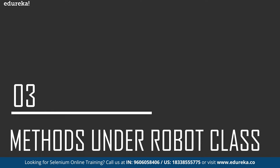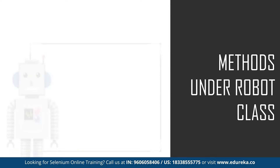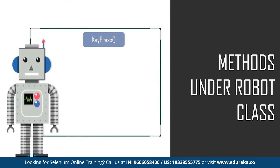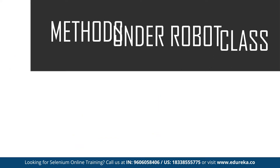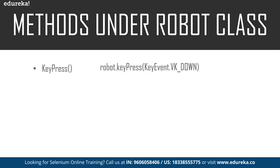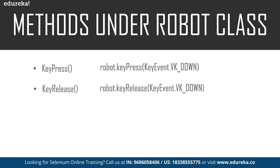Now let's move on to the different methods used while working with the robot class. There are basically five different methods, and since it handles all keyboard and mouse functions, the first method is key press, which is used to press any key on the keyboard — for example, pressing the up key. Next we have the key release method, which is used to release a pressed key of the keyboard — for example, releasing the caps lock key.